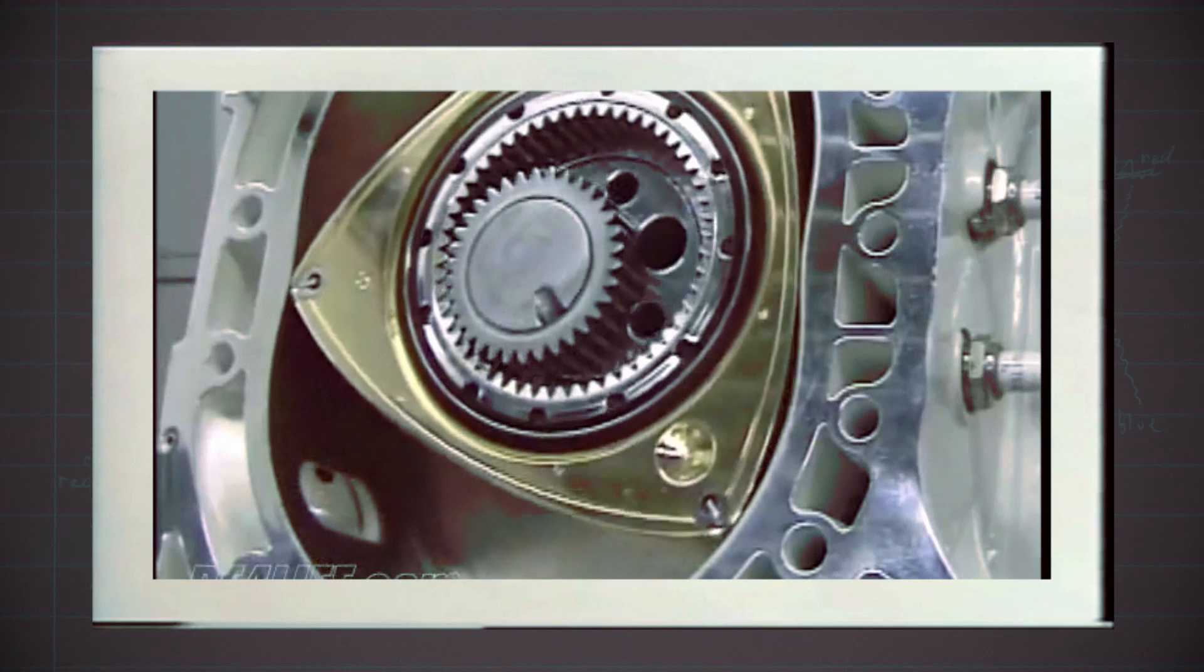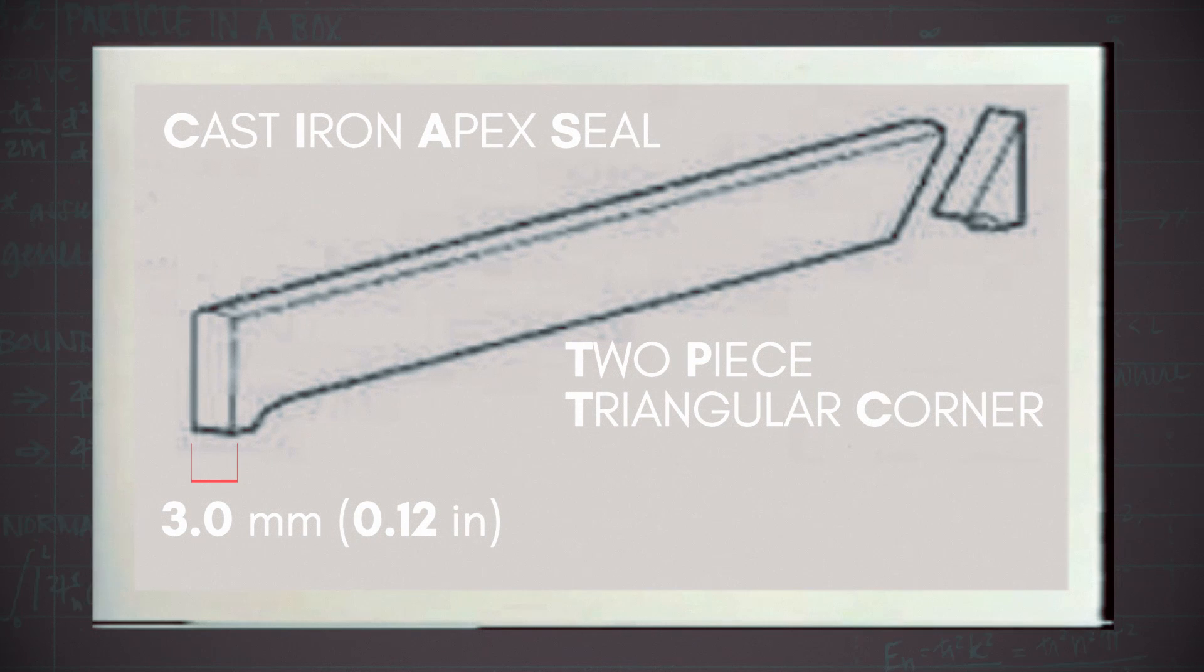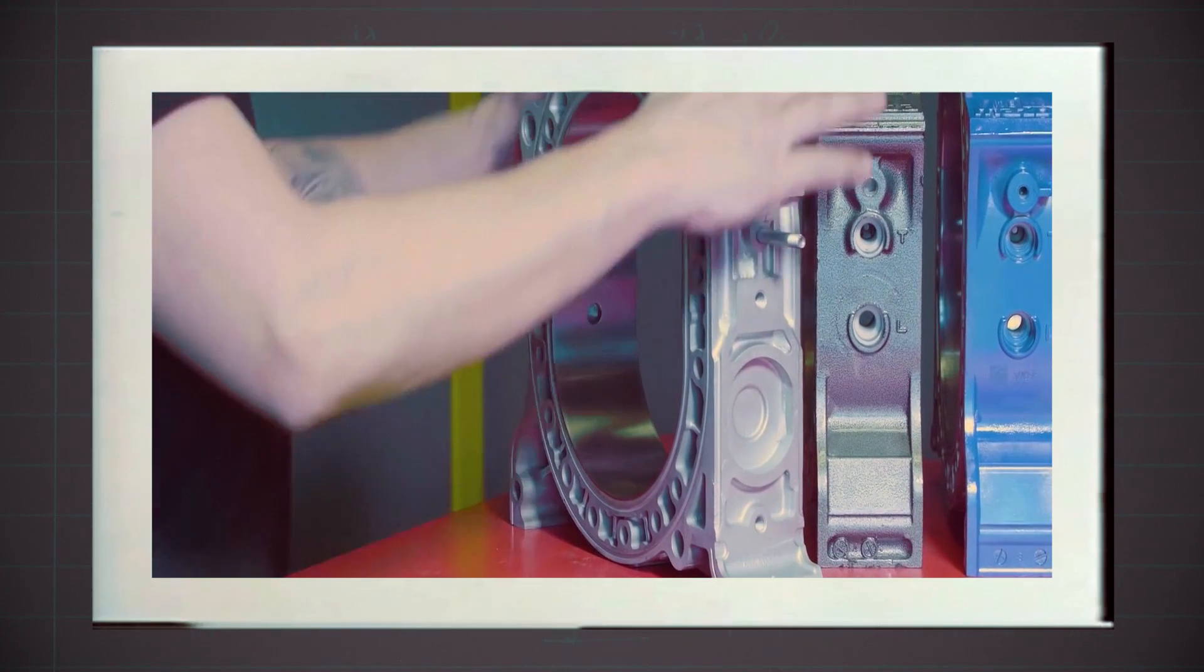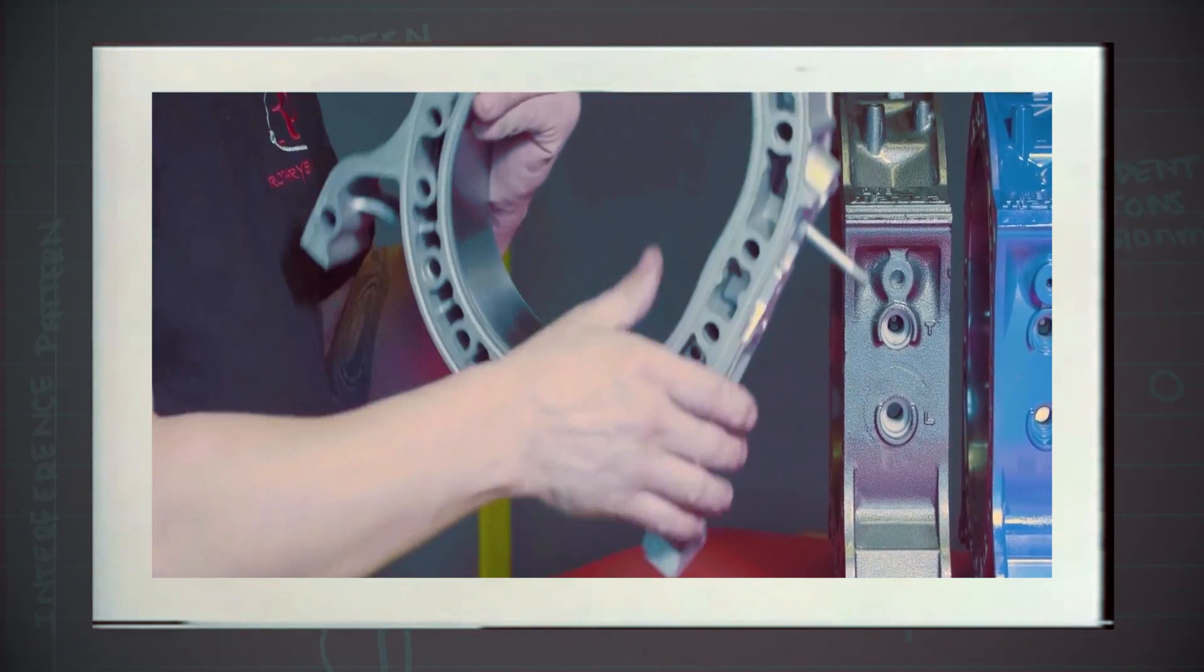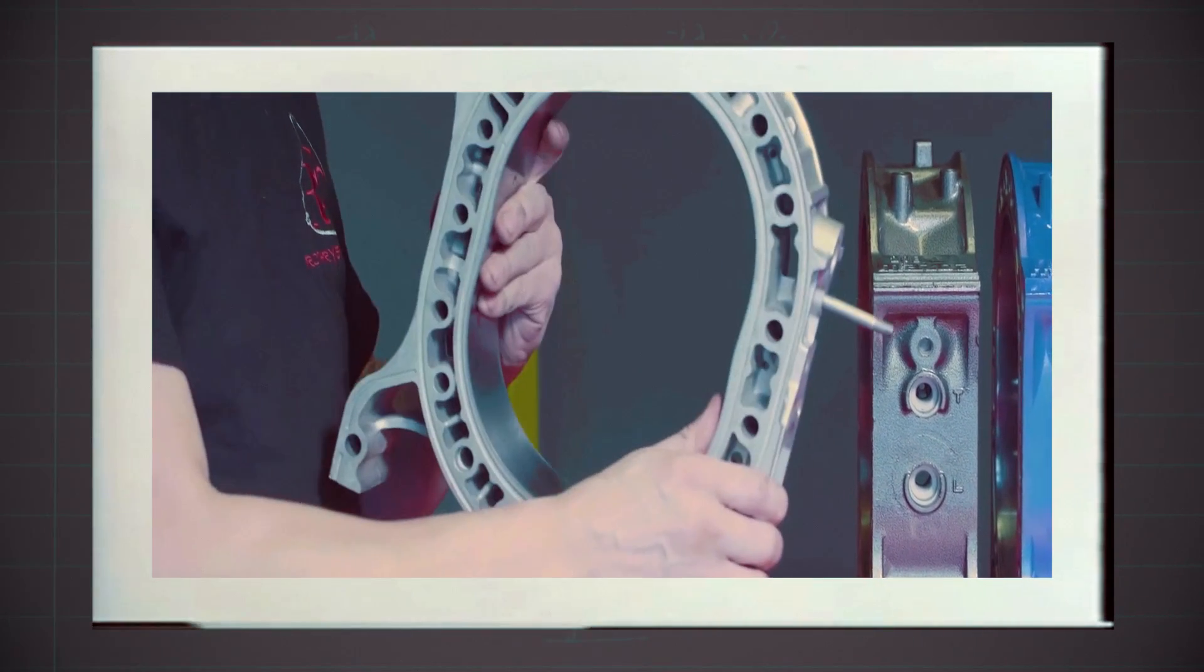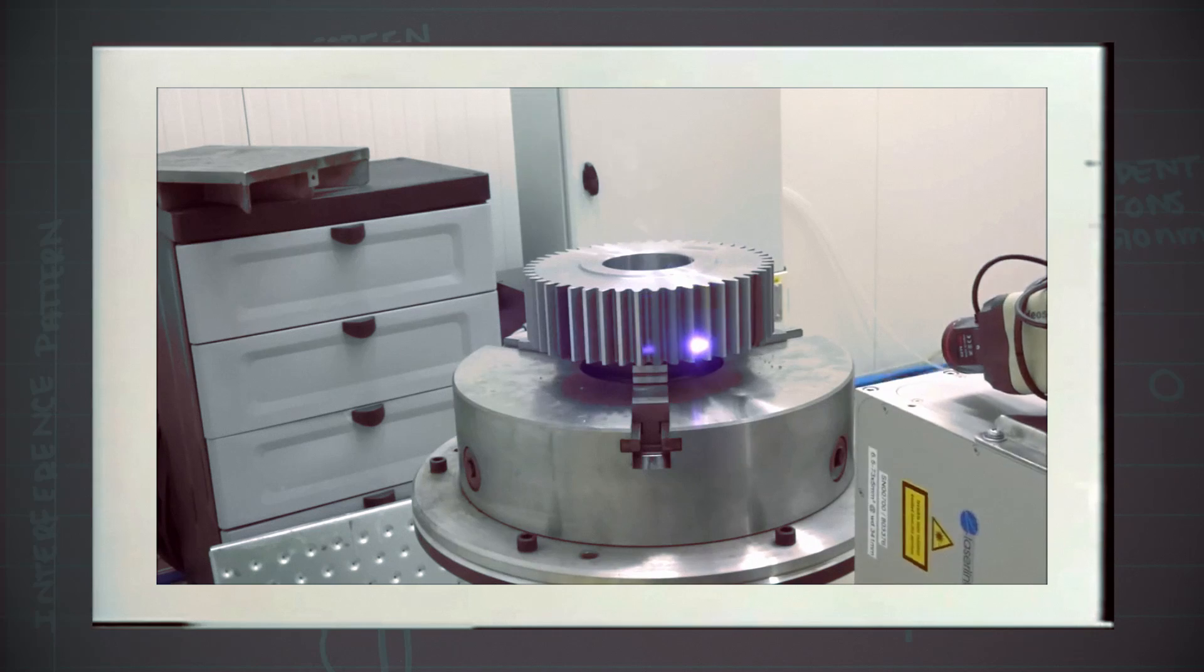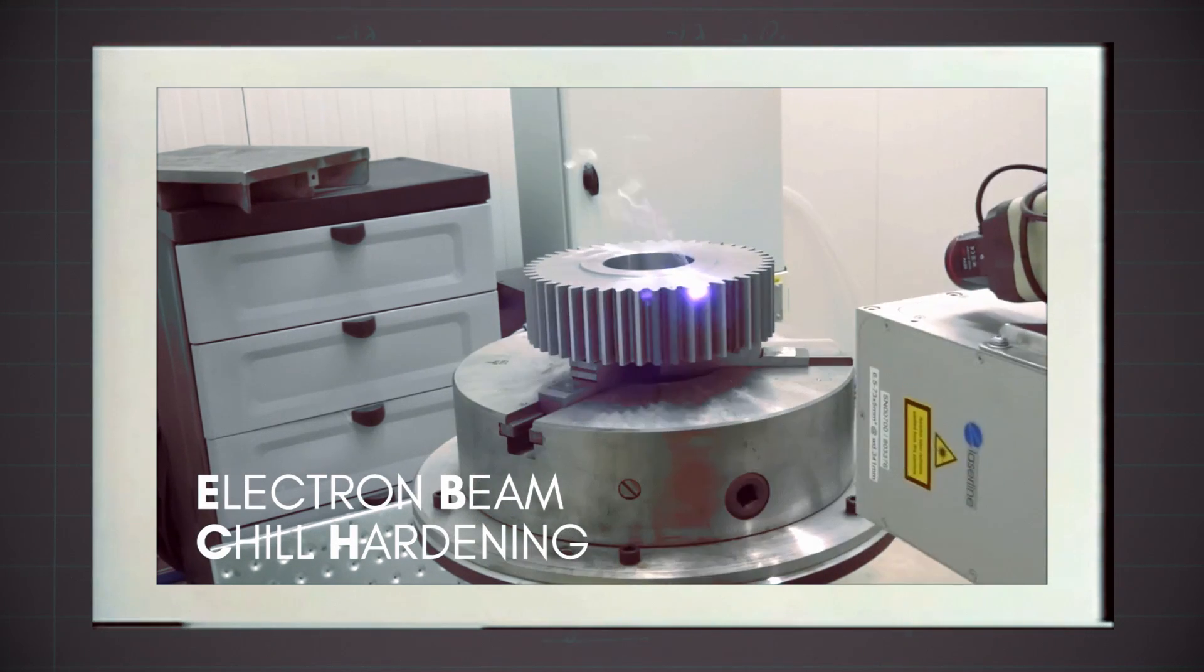From 1973 to 1975, a cast iron apex seal replaced the carbon compound design previously used. This new design also saw a 3mm or .12 inch reduction in thickness. What made this possible was the new pinpoint porous chrome plating on the interior walls of the rotor housing. This provided the lubrication between the apex seal and the rotor housing contact surfaces. The tip of the seal that made direct contact with the housing was crystallized in the form of carbides. This process is known as electron beam chill hardening, which gives the seal tip a ceramic light composition.